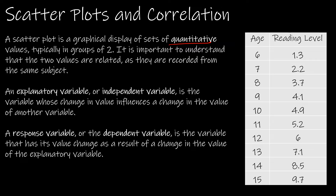Typically that relationship is going to be very easy to determine. With this particular example — age and reading level — would it make more sense to say that someone's age is based on their reading level, or someone's reading level is based on their age? It makes more sense that as age changes, changes will occur to the reading level. So age is the explanatory variable because it explains the changes in reading level. The response variable is reading level because the changes in reading level are a response to changes in age.